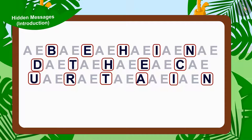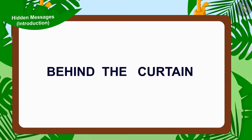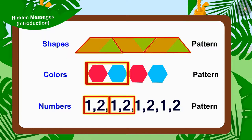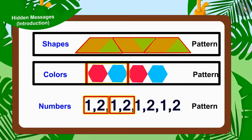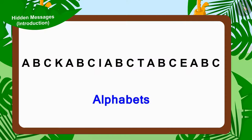Children, now did you understand the clue written in Appu's letter? Absolutely right! Here, the clue is Behind the Curtain. Children, the way we saw patterns made of shapes, colors and numbers — in the same way, we can hide various interesting messages by using alphabets.